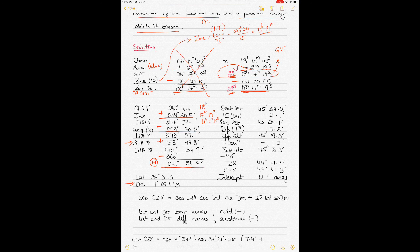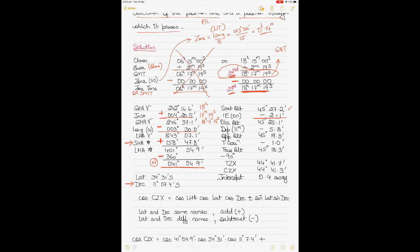Now solve the sextant altitude. The sextant altitude is 45 degrees 27.2. Apply the index error of 2.1 minutes on the arc — when it's on the arc you subtract it; if it were off the arc you would add it. Subtracting gives an observed altitude of 45 degrees 25.1.